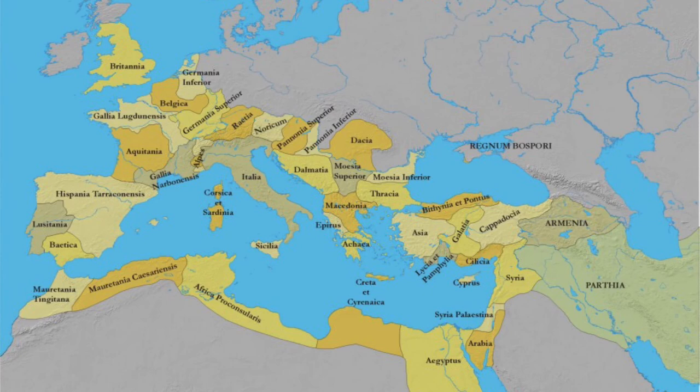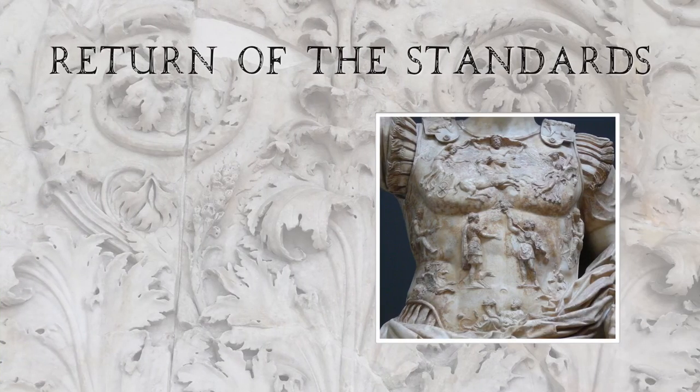Looking at the map, we can see Parthia in the green on the right-hand side. Armenia and the client kingdoms in modern Turkey are these buffer states, protecting the Roman Empire from the Parthians. This picture depicts the return of the Roman standards from the Parthians to the Romans — Augustus managed to get them back, which he was very proud about.